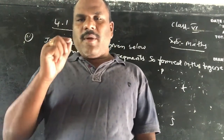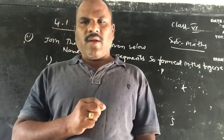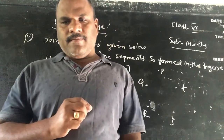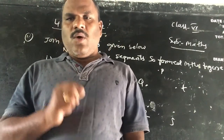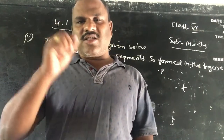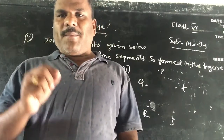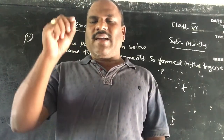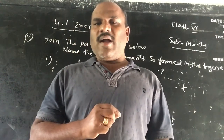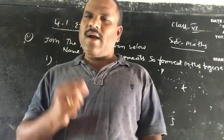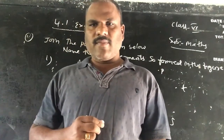A point means it determines a location, or it represents a location, and it is represented by a capital letter. For example, suppose you want to locate any one of the districts in Telangana state — there you can put a point. That point determines which district is present in Telangana state. A point is always represented by capital letters such as A, B, C, P, or R.